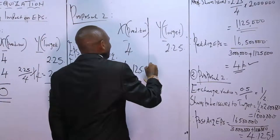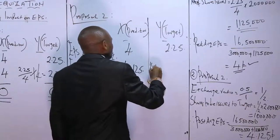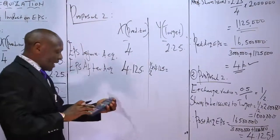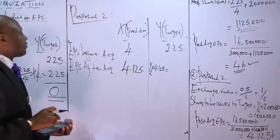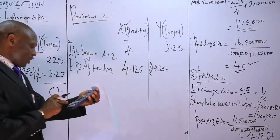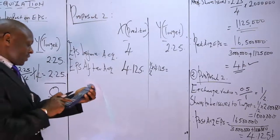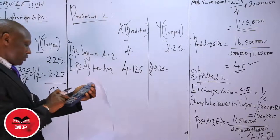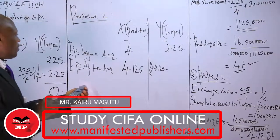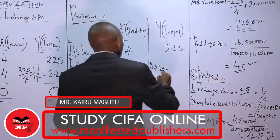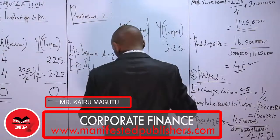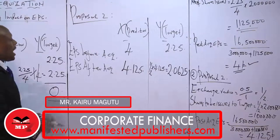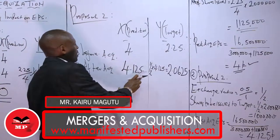The exchange ratio for Y is one out of two, so the EPS to shareholders in the target is calculated as one-half multiplied by four point one two five. This gives us two point zero six two five shillings as the EPS attributable to Y's shareholders after the acquisition.